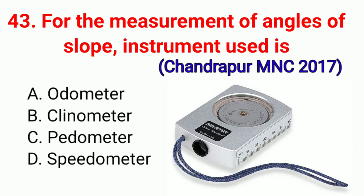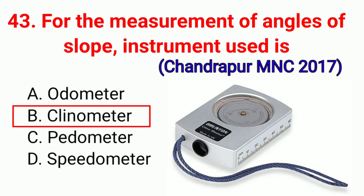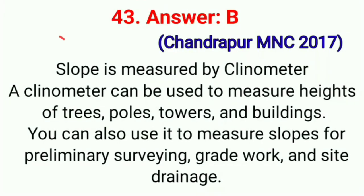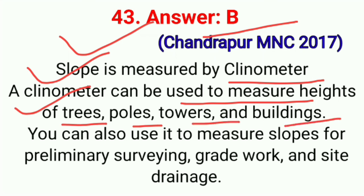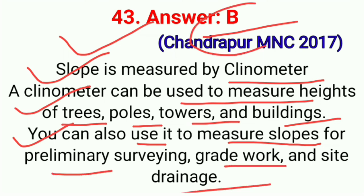Question No. 43. For the measurement of angles of slope, the instrument used is — correct option B: Clinometer. Slope is measured by clinometer. A clinometer can be used to measure heights of trees, poles, towers, and buildings. It can also be used to measure slope for preliminary surveying, grade work, and side drainage. Correct option B.